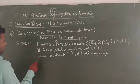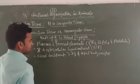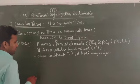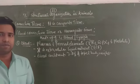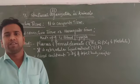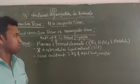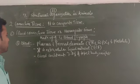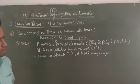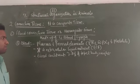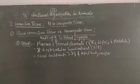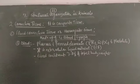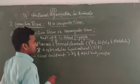Blood performs many functions in the body, like helping in the regulation of temperature, providing transport of various materials to different body parts, providing immunity, and transporting oxygen to different body parts. The formed elements are in three categories: RBCs, WBCs, and platelets. We will discuss their numbers, percentages, and what happens if RBC count decreases, under the topic of blood.